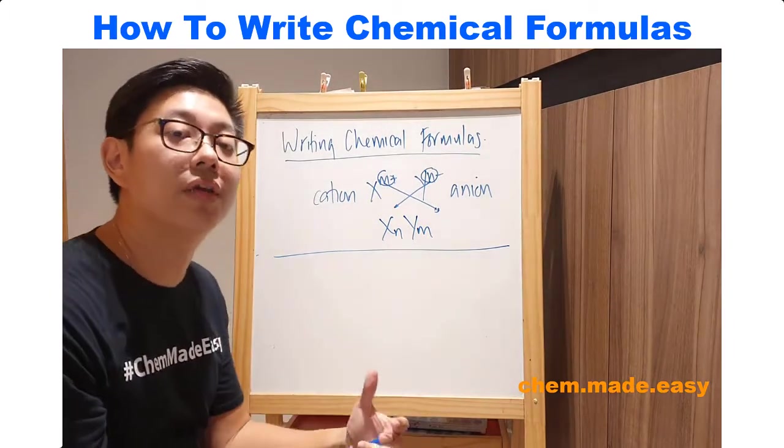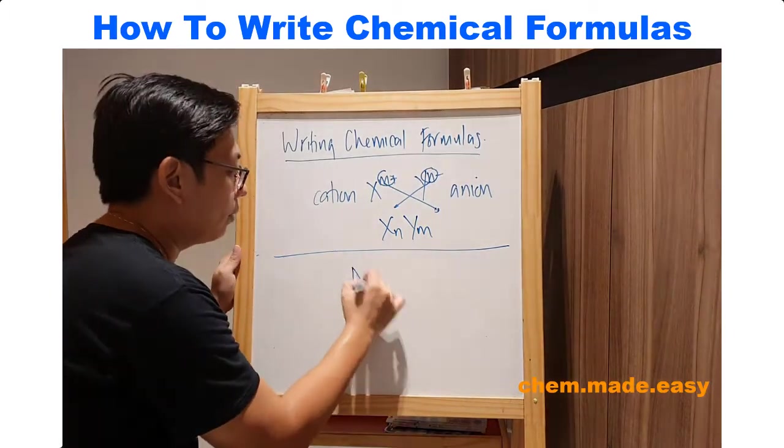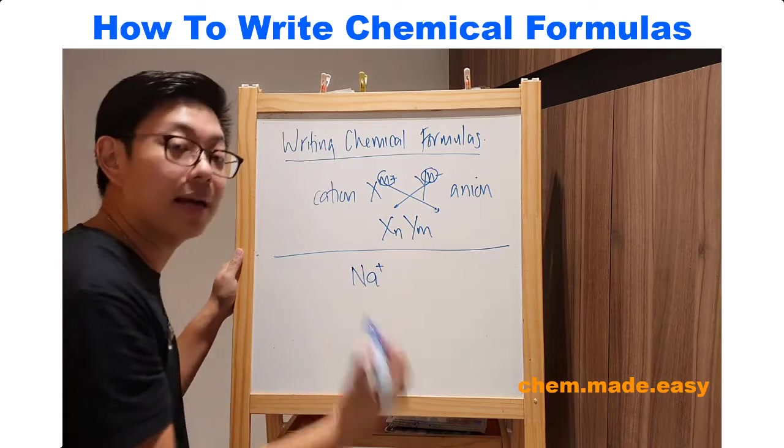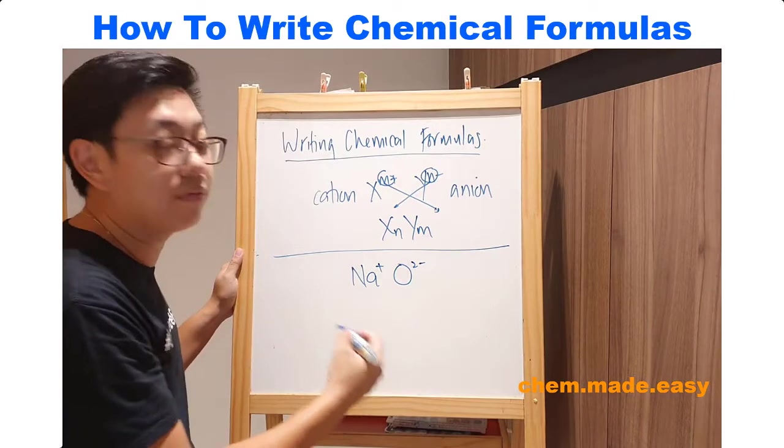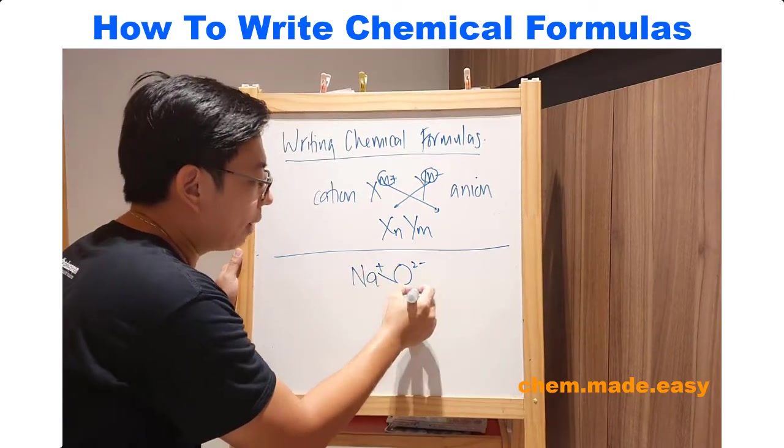For example, if I give you sodium oxide. Now sodium is in group one, it is Na+, and oxygen is in group six, two minus. To write the chemical formula of sodium oxide, you want to cross the numbers down,